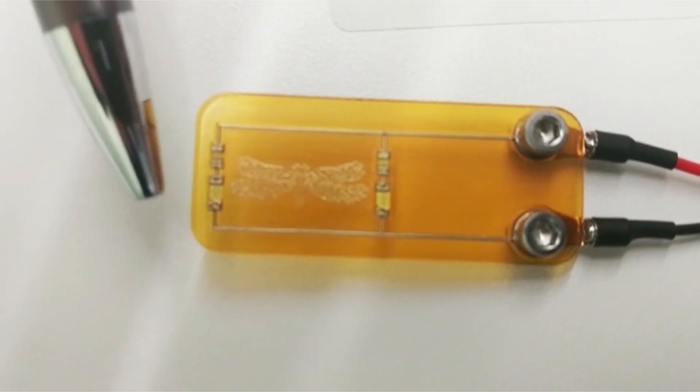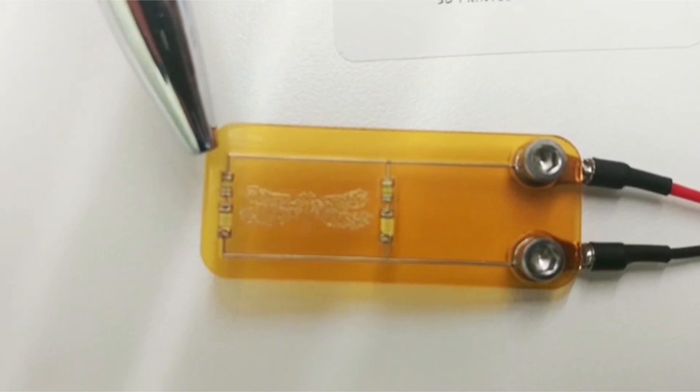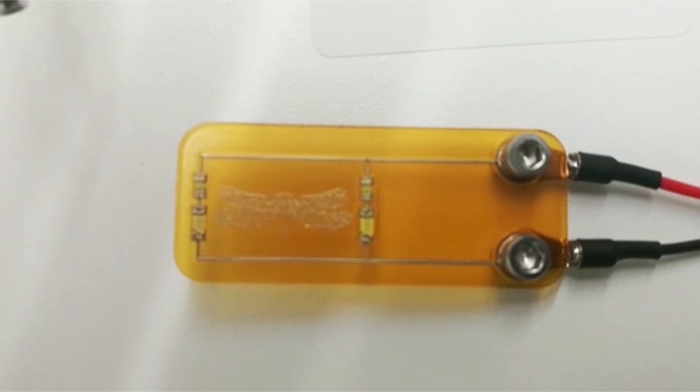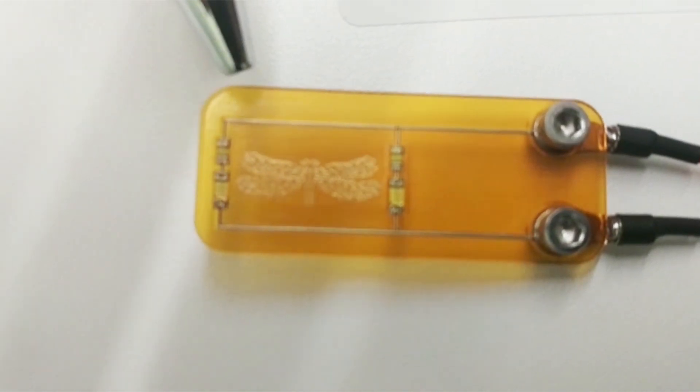We created cavities, and in these cavities we placed both resistors and LEDs. Then we continued the print.